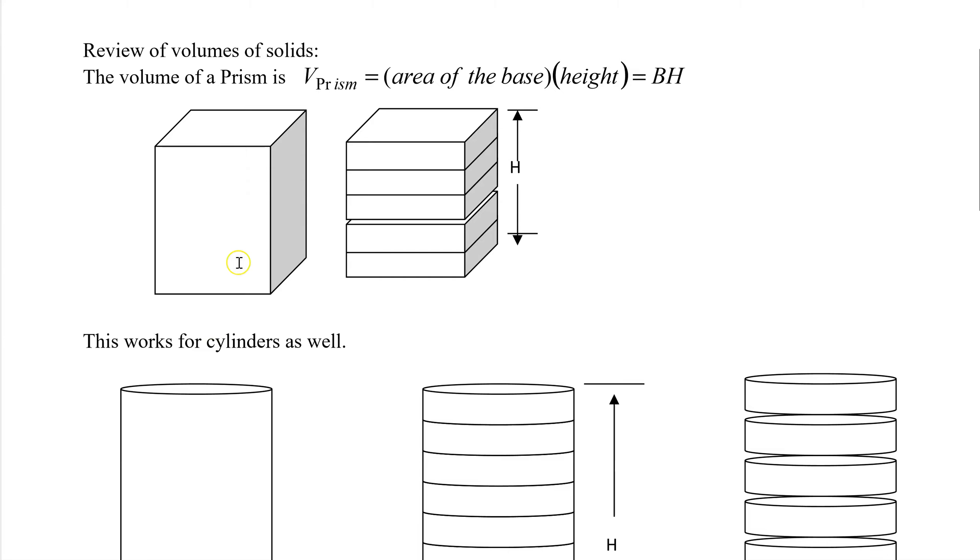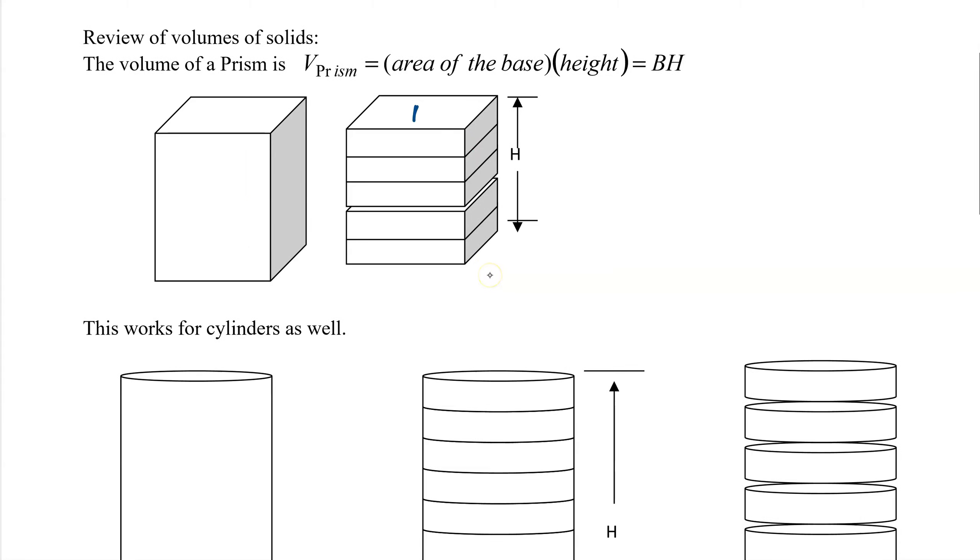So if you look at our prism here, you can basically break it into these cross sections here, where you have some area of the base times the height. And so what this area of the base represents is this square.